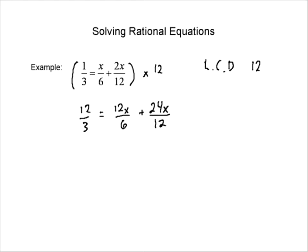All I've done is multiplied everything by 12 — I haven't tried to solve anything yet. Now I can get rid of the fractions: 12 over 3 becomes 4, 12x over 6 becomes 2x, and 24x over 12 becomes 2x. So we get 4 equals 4x, which gives us x equals 1.